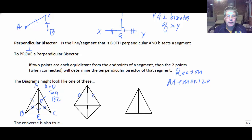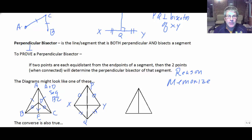We've seen diagrams like this before — it looks kind of like a kite. So we could have P and Q each equidistant from X and Y. P is the same distance from X as it is from Y, and Q, while a different distance, is also equidistant from X and Y. So P and Q, when connected, form the perpendicular bisector of XY.